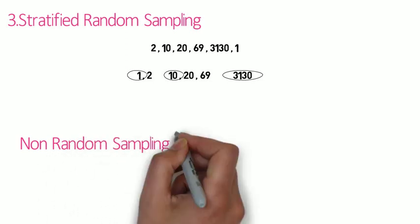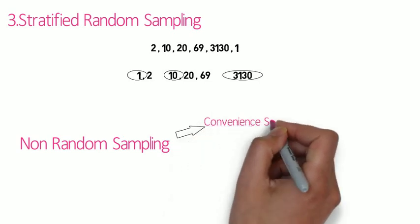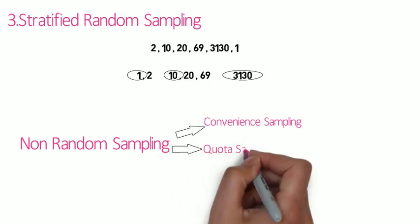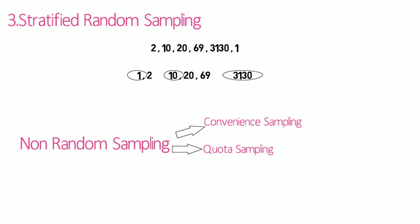There are also some non-random sampling methods. Convenience sampling is done at the convenience of the researcher with no fixed pattern. Quota sampling is where the population is first segmented into mutually exclusive subgroups, just as in stratified sampling, but then judgment is used to select units for each group non-randomly — it is basically a type of convenience sampling. Then there is snowball sampling, used for drug users and commercial sex workers, where existing study subjects recruit future subjects from their acquaintances. It is used to find hidden populations — for example, tracing one drug abuser back through their network.